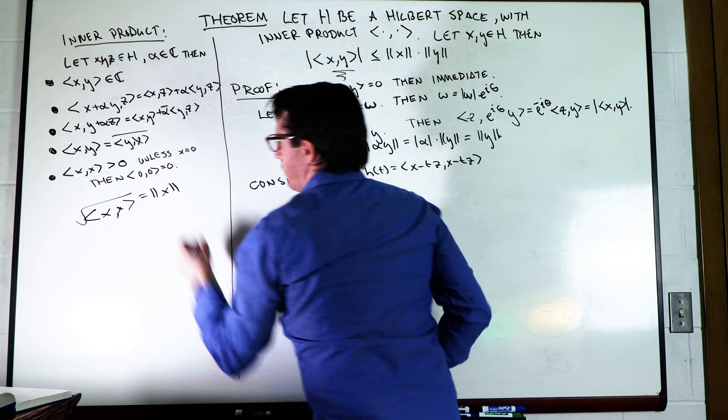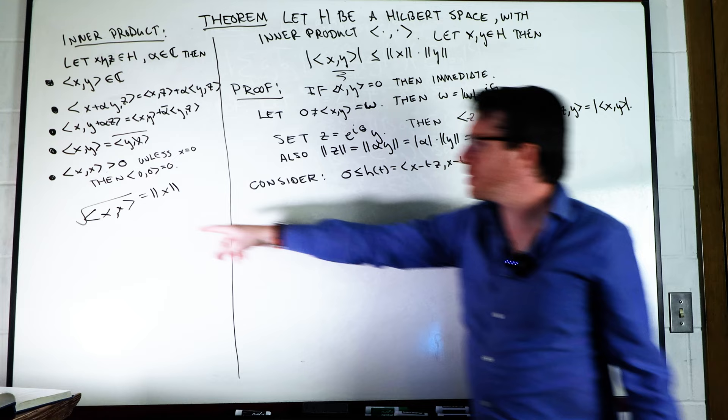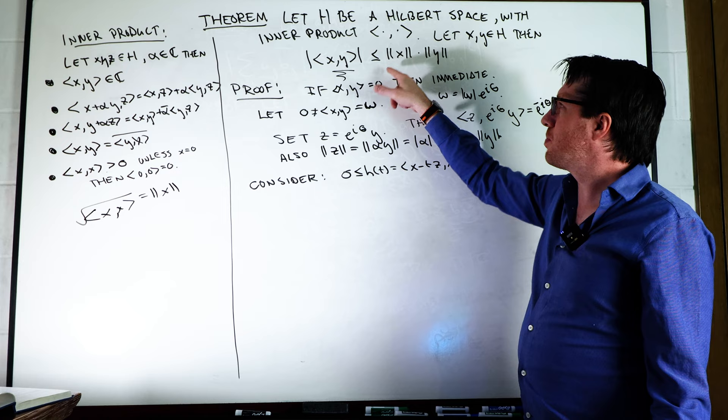So basically what we're going to do is start with assuming that x inner product y is zero, but then everything falls immediately because we know that this term is going to be positive just by this property. So these two guys are going to be non-negative at the very least. This guy is going to be zero bounded by non-negative terms. It satisfies the inequality, so that's nice and easy.